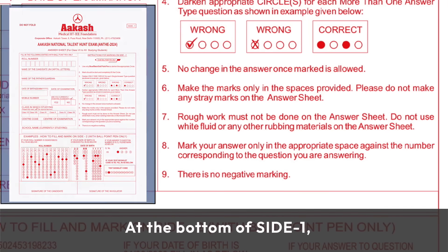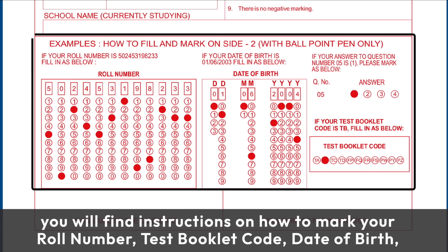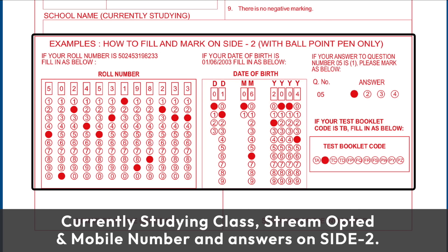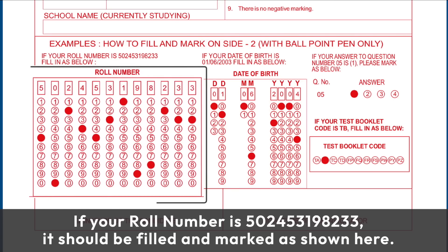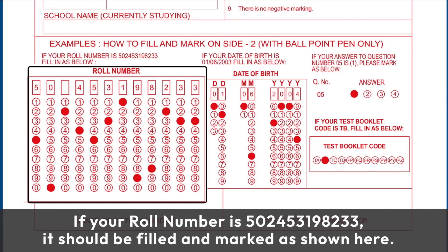At the bottom of side 1, you will find instructions on how to mark your roll number, test booklet code, date of birth, currently studying class, stream opted, mobile number, and answers on side 2. For example, if your roll number is 50245319823, it should be filled and marked as shown here.